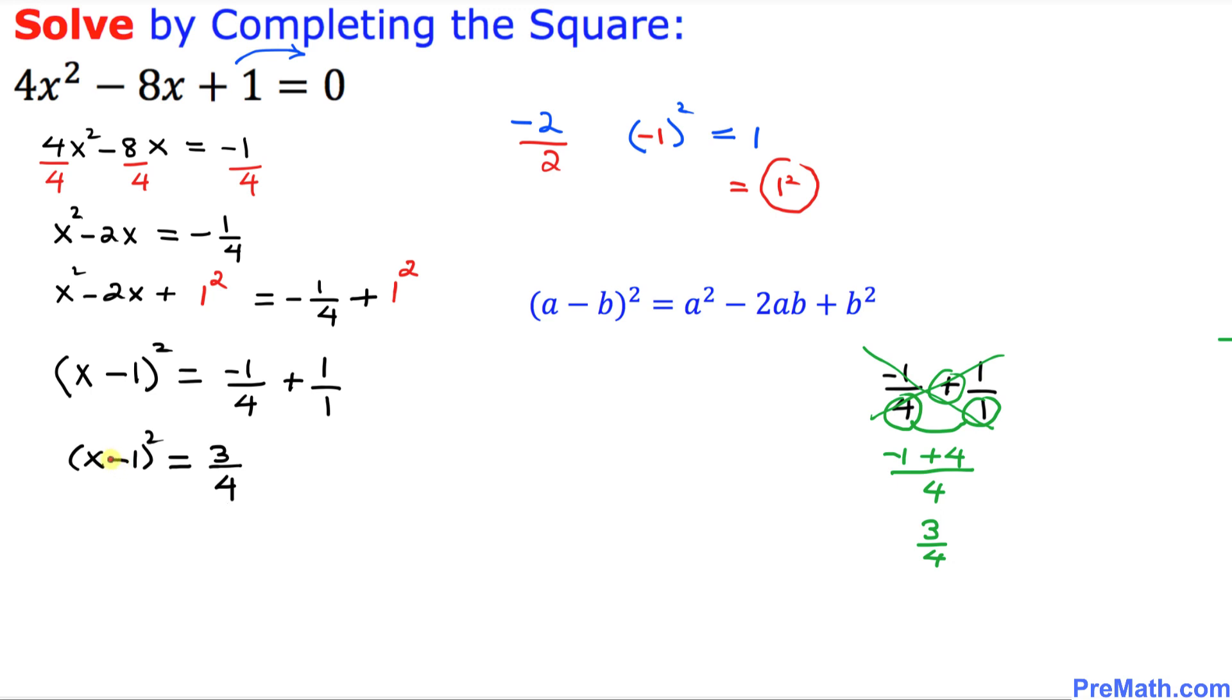And now since we want to solve for x, I'm going to undo this square part, cancel out this square part, by just taking the square root on both sides. So you can see that this square and square root is gone. So we simply ended up with x minus 1 equal to positive or negative. We are putting positive or negative because we are dealing with the quadratic equation. And this on the top is going to be square root of 3 divided by the square root of the denominator. 4 is going to simply become 2.